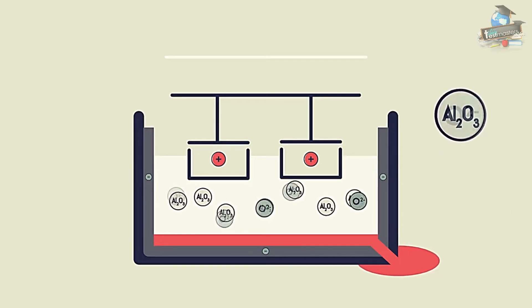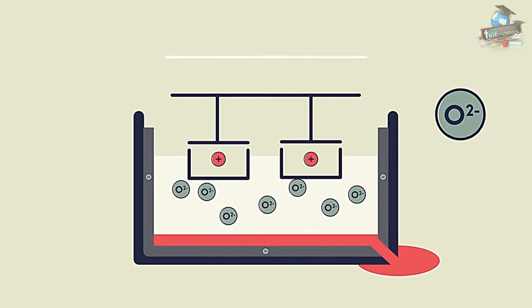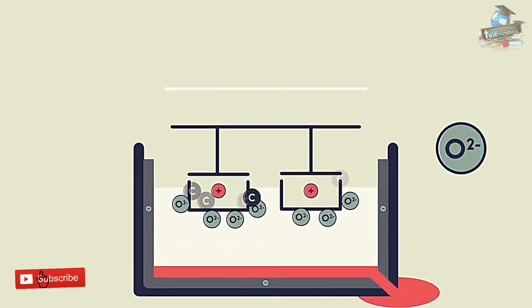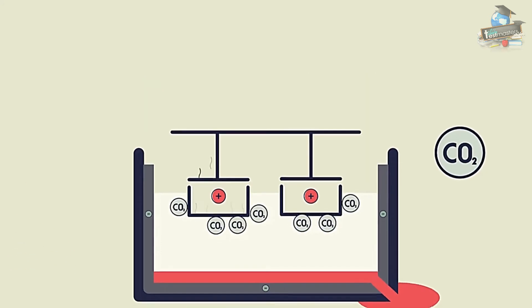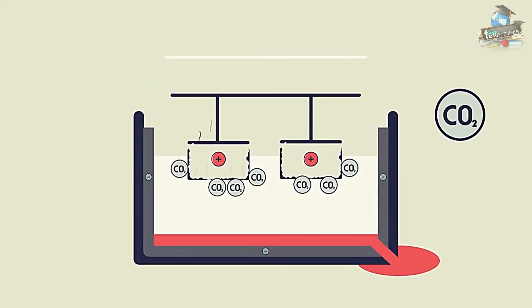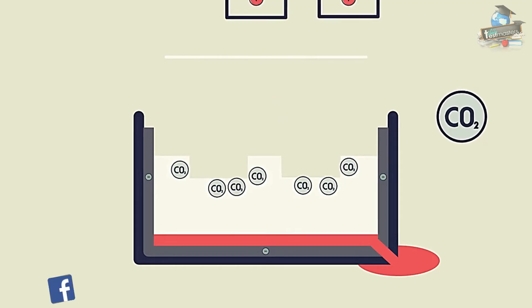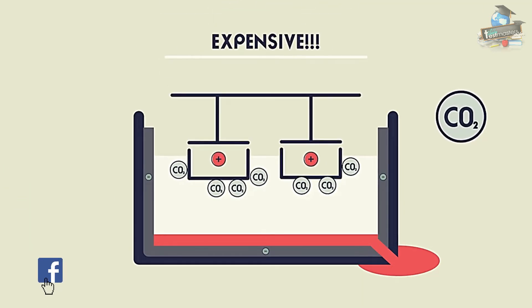The oxygen from the aluminium oxide in the cryolite forms at the positive anodes. The oxygen reacts with the carbon of the graphite forming carbon dioxide. The positive anode therefore burns away and needs replacing regularly. This is another reason for the extraction of aluminium being so expensive.